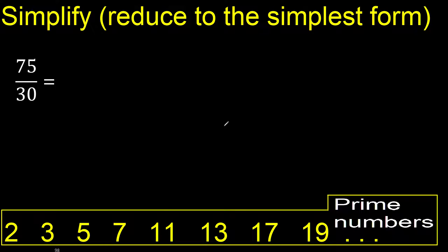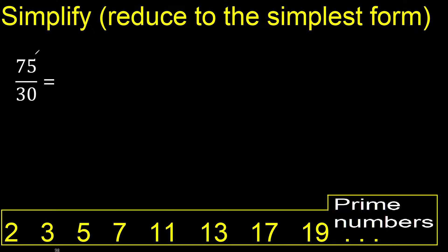Simplify. 75 and 30 cannot be divided by 2, because here the last digit is not even, therefore 75 cannot be divided by 2.